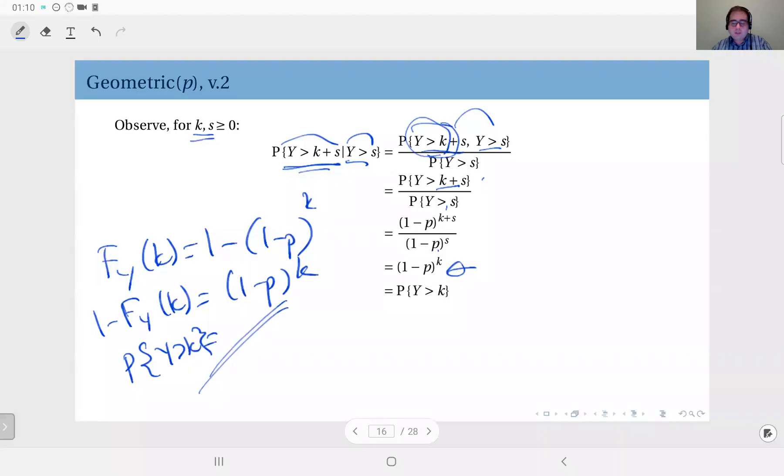So what? What does this mean? Let's see, what is this probability? What is the conditional probability? Probability that y exceeds k plus s given y greater than s. Well, in general, we call this the memoryless property.